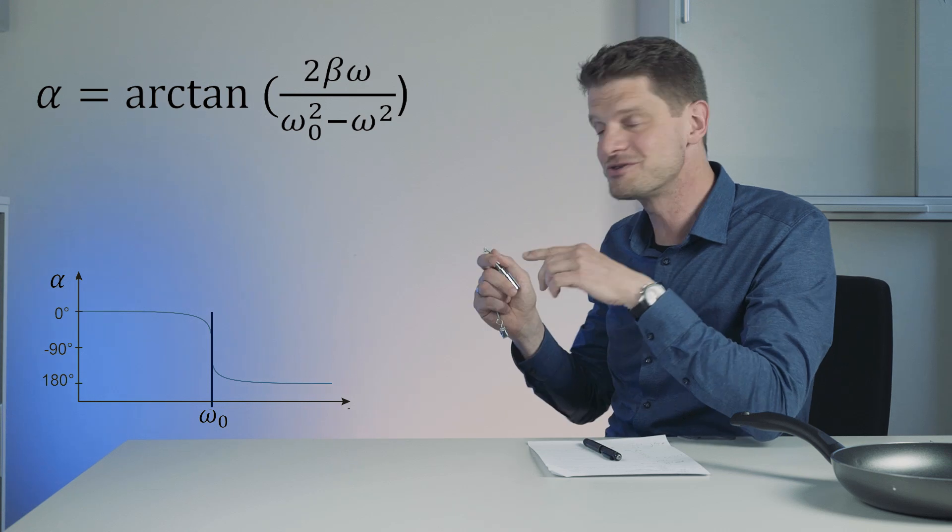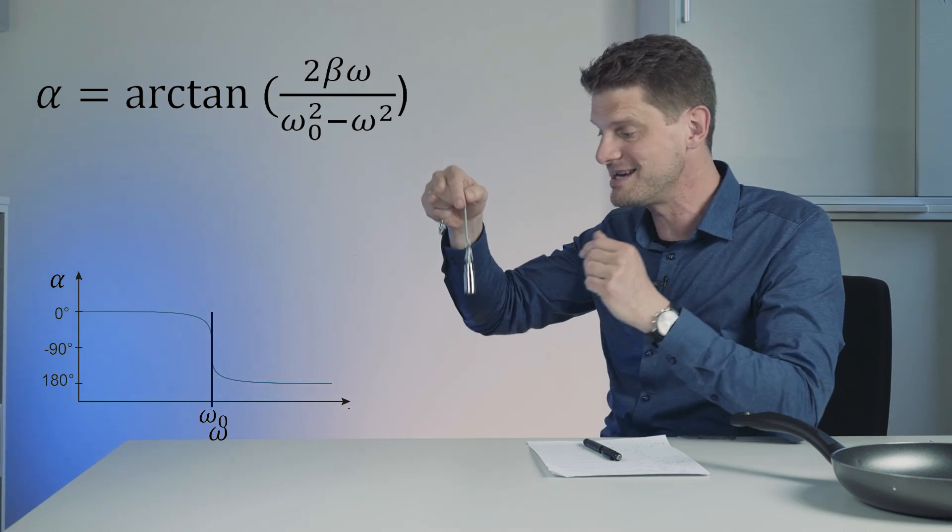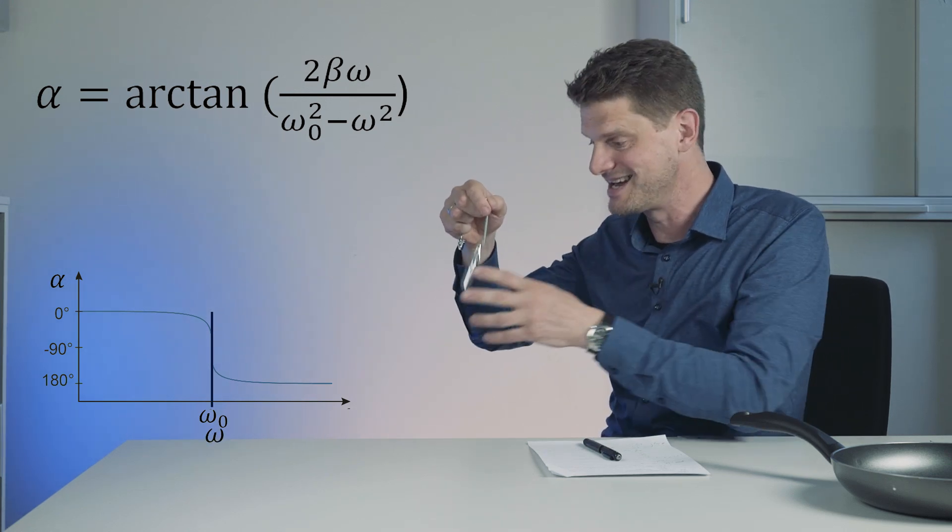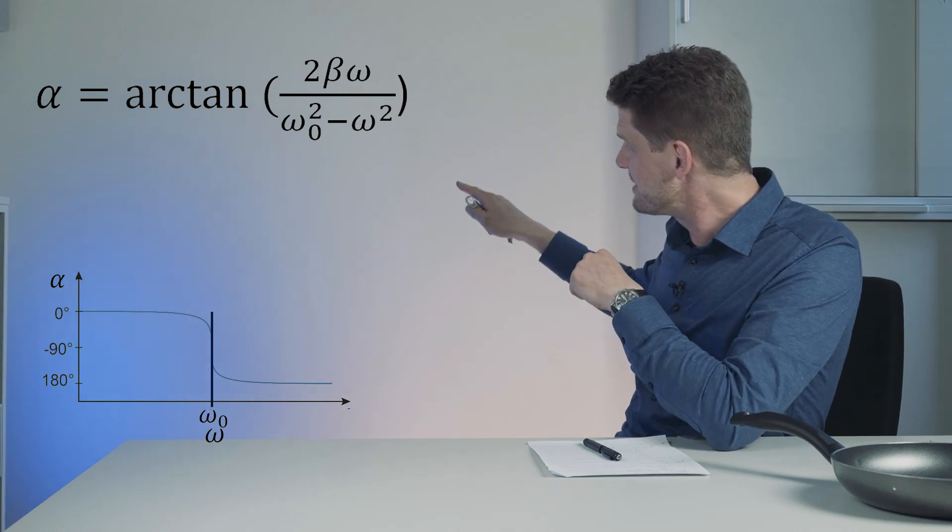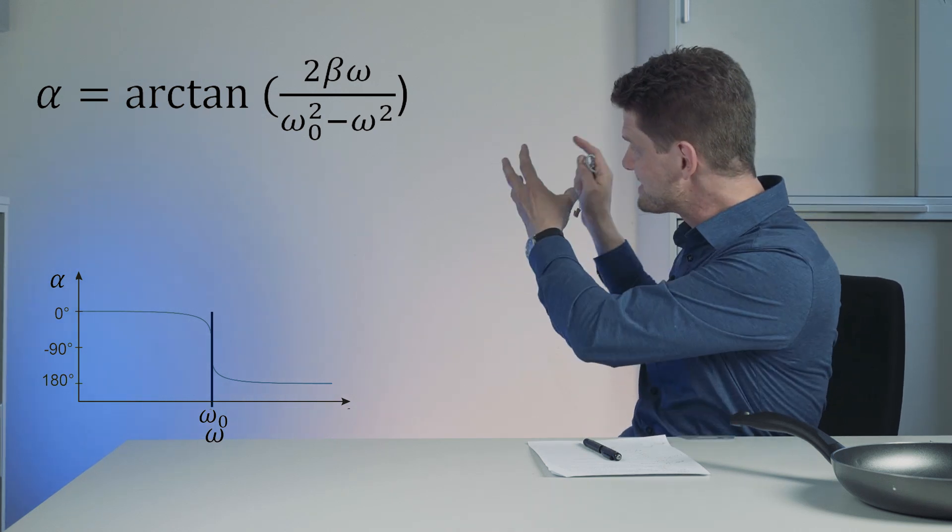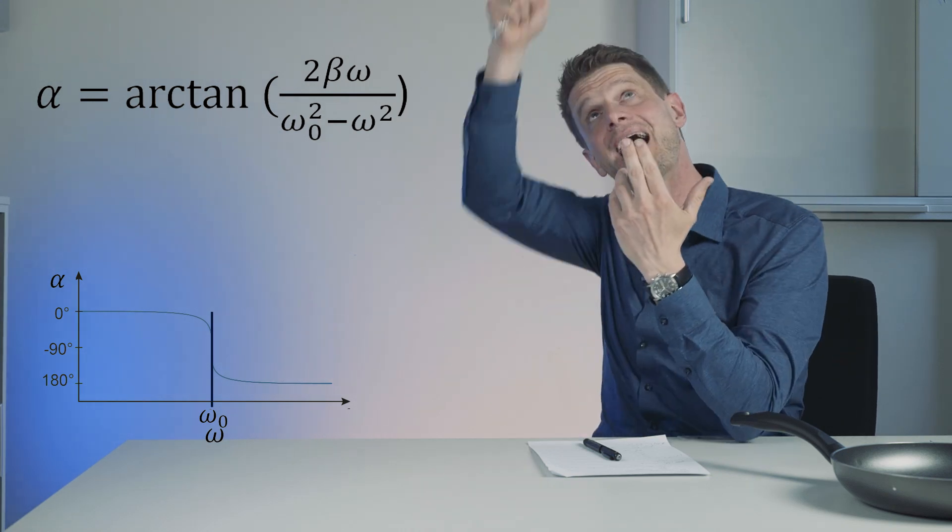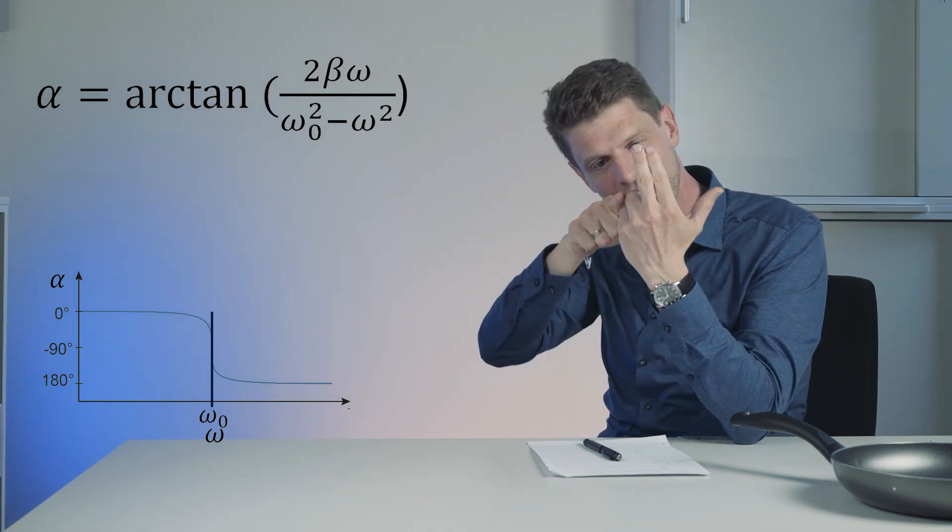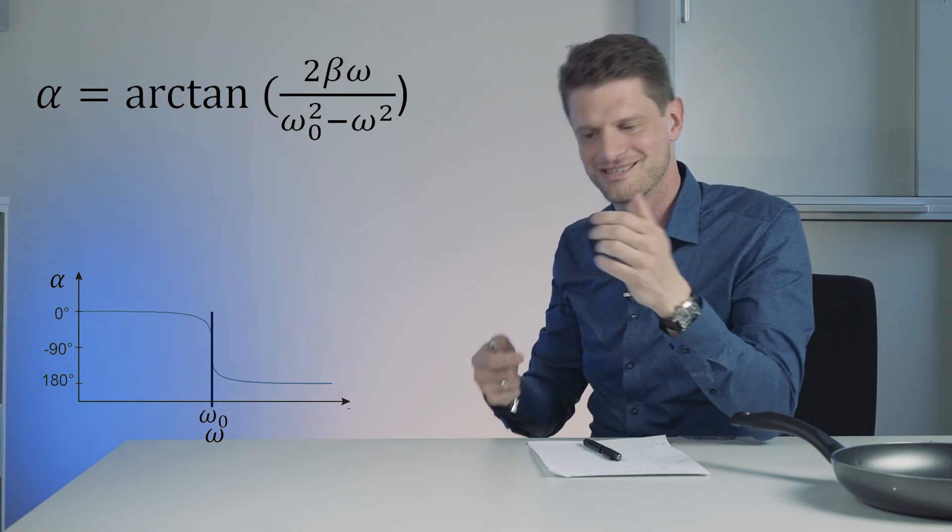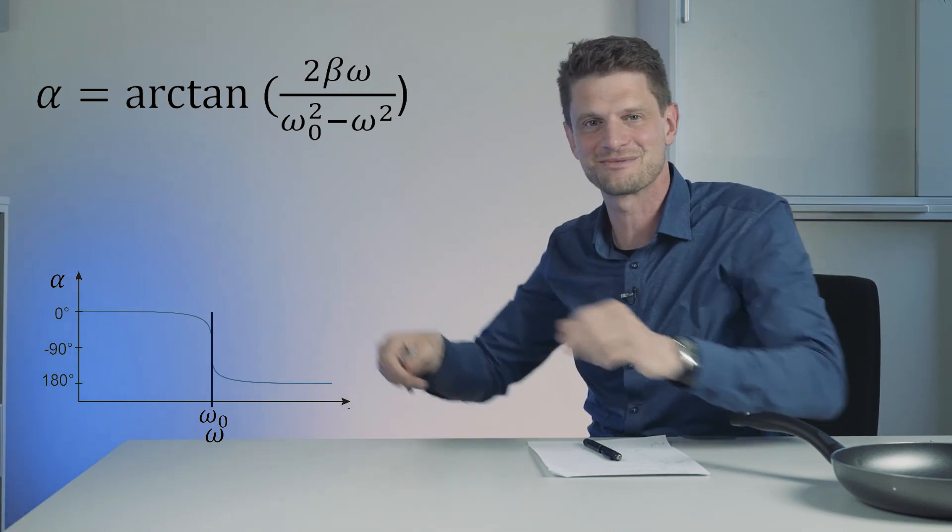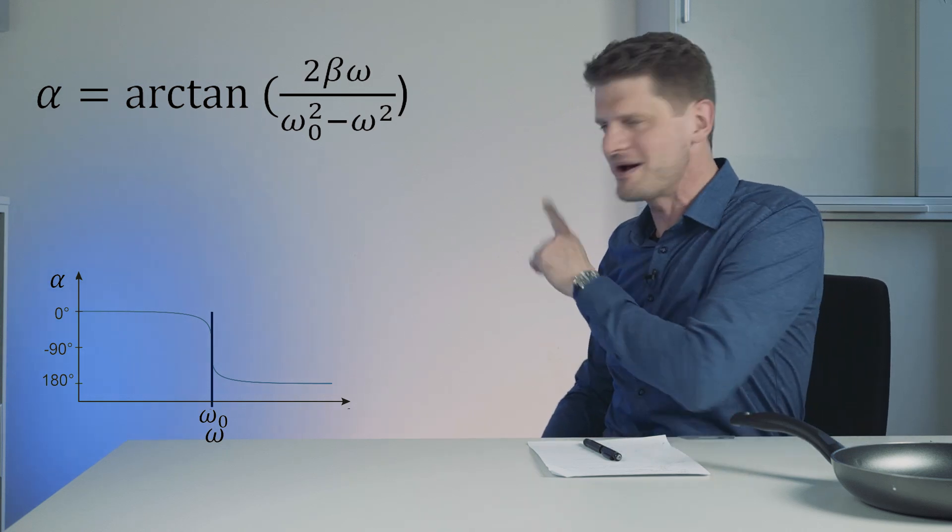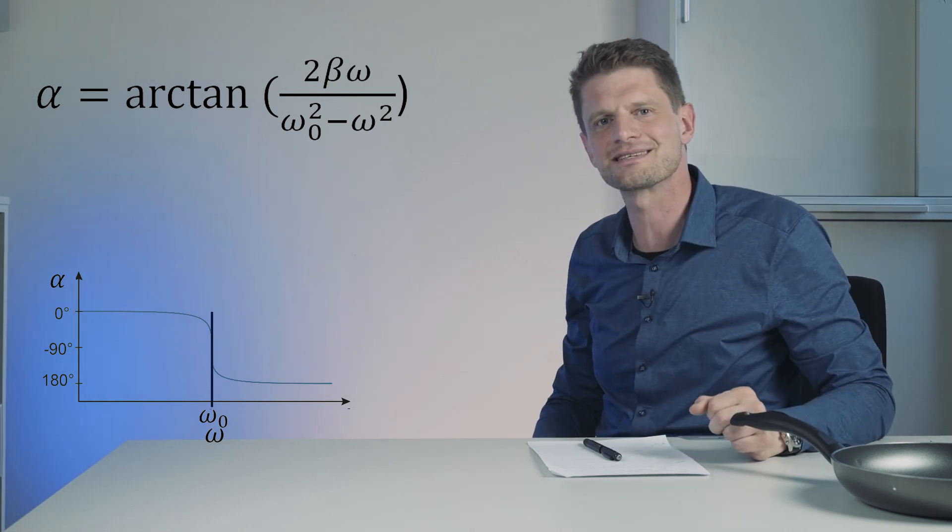And if omega is equal to omega 0, so we stimulate in its eigenfrequency, then this full term below will be zero. So the full term inside of the bracket will be very high. And arcus tangens from a high level gives us the angle of 90 degree. That's what we see. Just a phase shift pushing the swing. It's all in the formula. So write this down. This gives you a good understanding.